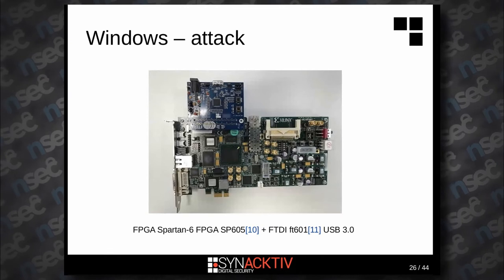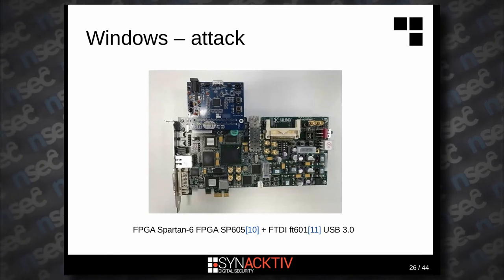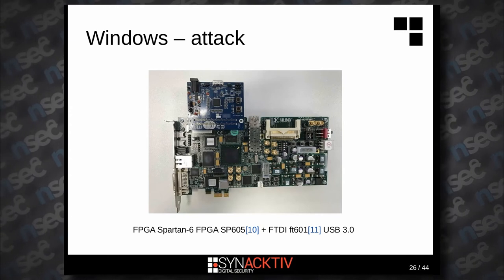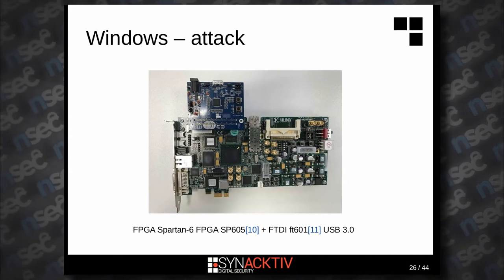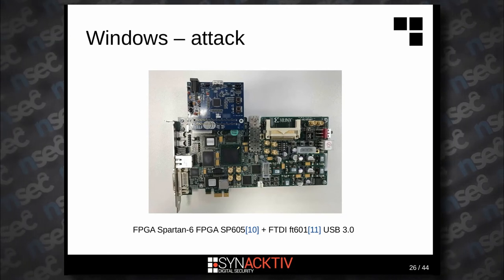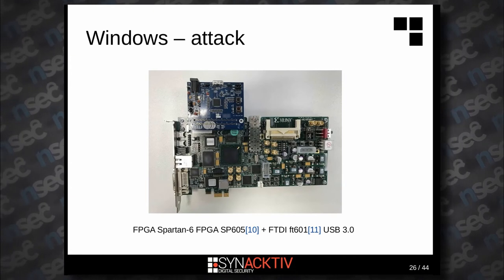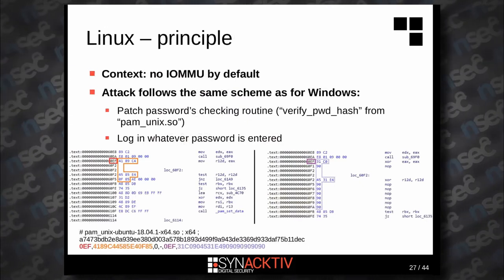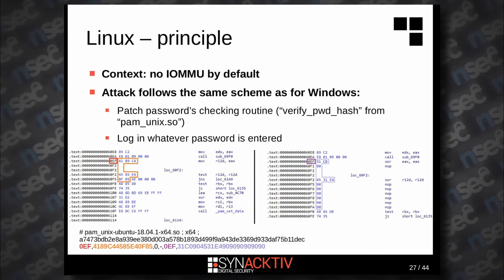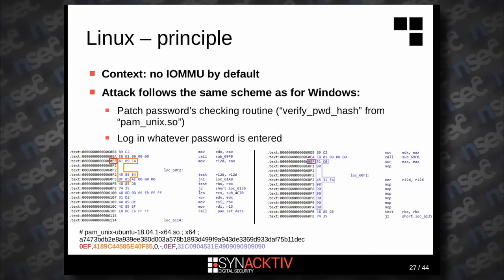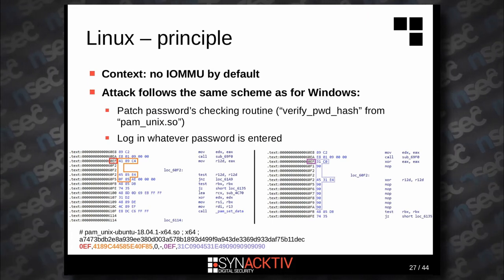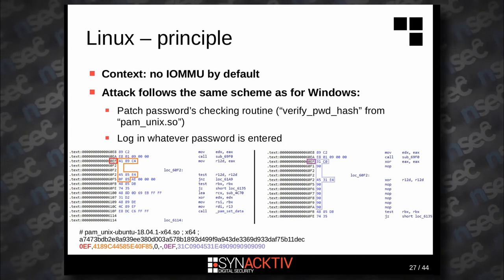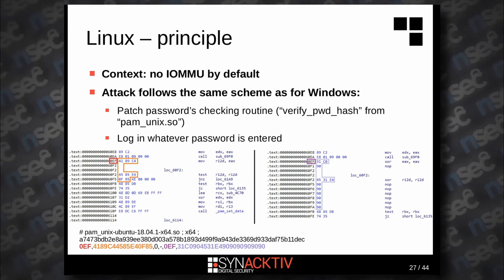Here is an example of my FPGA with its USB extension card on top. The FPGA is quite large — useful for testing — but when you want to attack, you'll prefer the PCIe Screamer because it's much tinier. On Linux there is also no IOMMU used by default. The attack principle is exactly the same: you search for the password unlocking routine, which in this case is verify_password_hash from the pam_unix.so library. You need two patches, and at the bottom of the slide you can see the signature for this specific library.